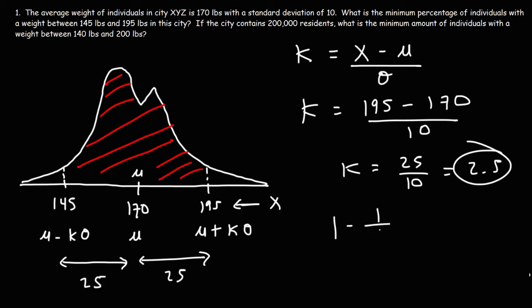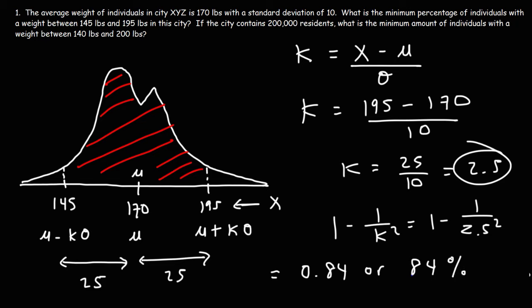Using the formula 1 minus 1 over k squared with k equals 2.5: 1 minus 1 over 2.5 squared gives us 0.84, or 84%. This means at least 84% of individuals in this city will have a weight between 145 and 195 pounds. The actual answer could be 86%, 89%, or 95%, but at least we know the minimum percentage.